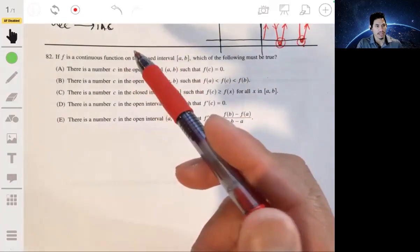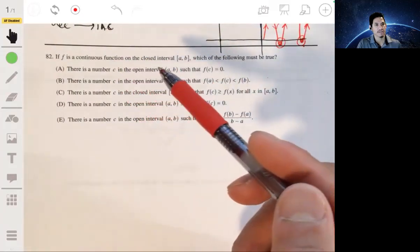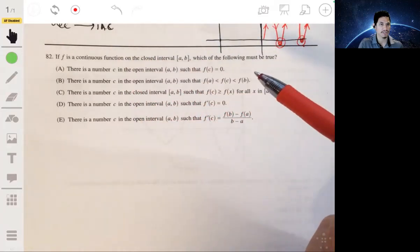All right, 82. If F is a continuous function on the closed interval A to B, which of the following must be true?